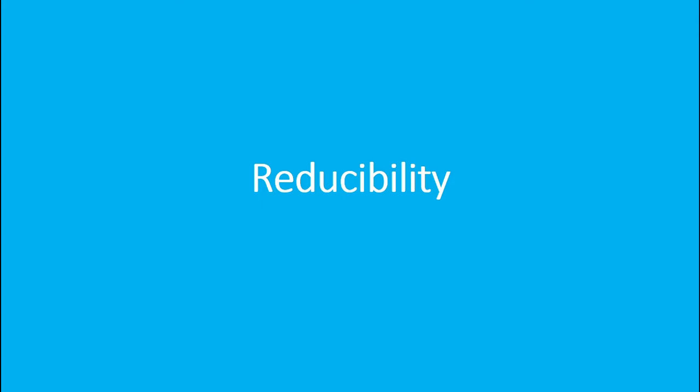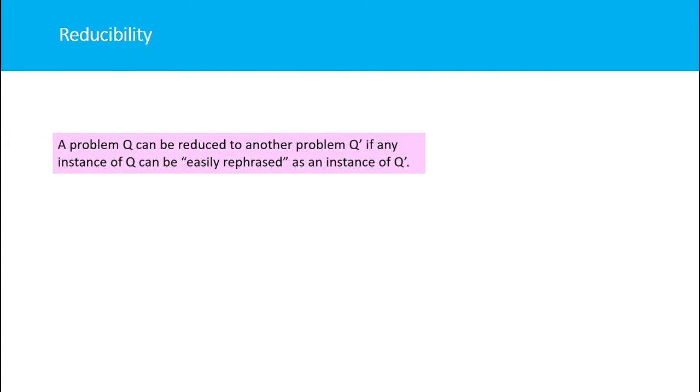Reducibility is a topic needed when proving problems as NP-complete. By reducibility, we mean that a problem Q can be reduced to another problem Q' if any instance of Q can be easily rephrased as an instance of Q'.